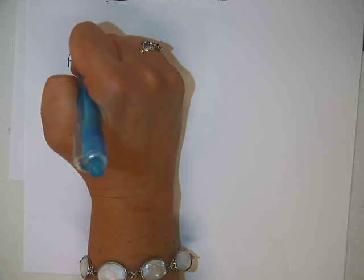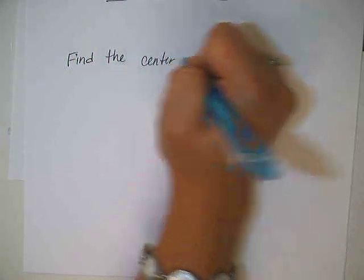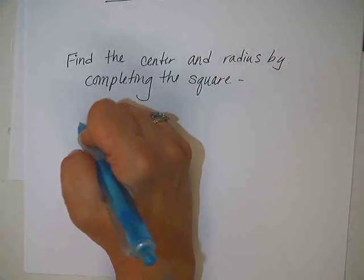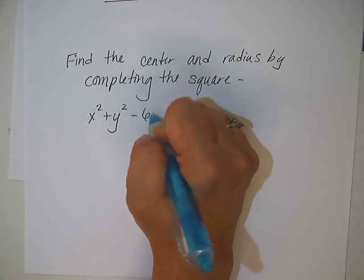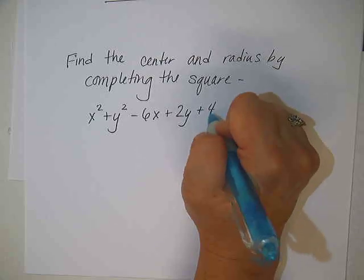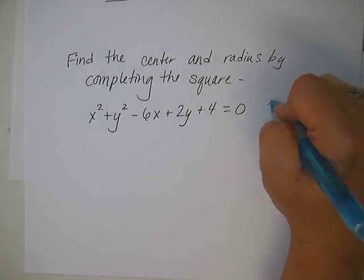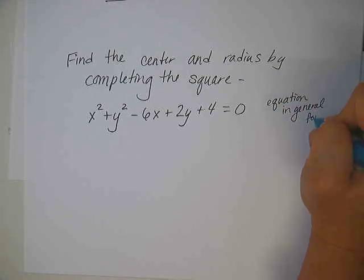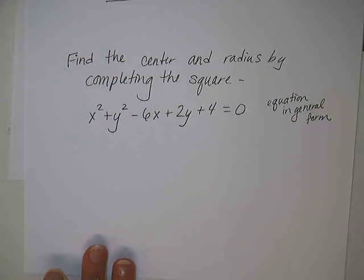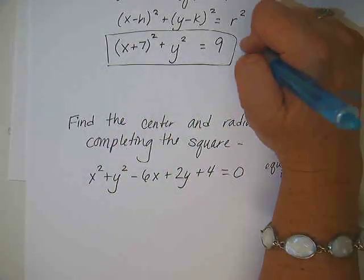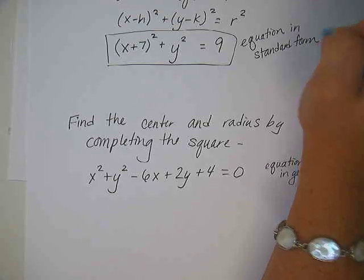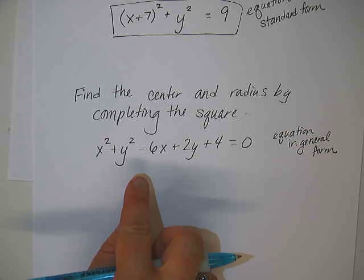Okay, the hardest problems you will have to do on your assignment today require you to find the center and radius by completing the square. Find the center and radius by completing the square. We've done a little bit of completing the square, haven't we? Yeah. Okay, so here's an example. x squared plus y squared minus 6x plus 2y plus 4 equals 0. This is the equation of a circle in general form. Well, that's the problem we're doing. I don't care if you want to write it.